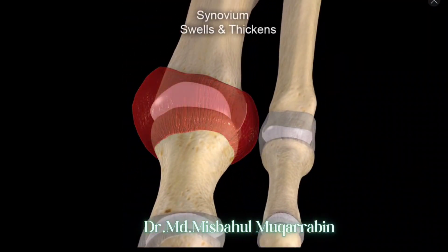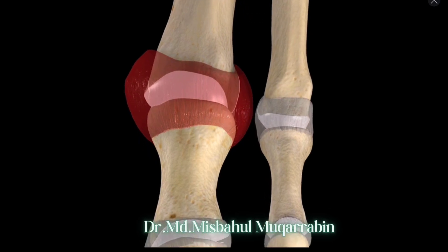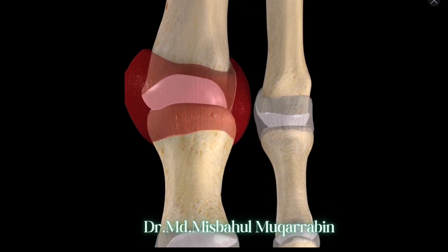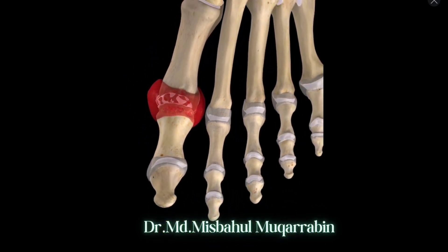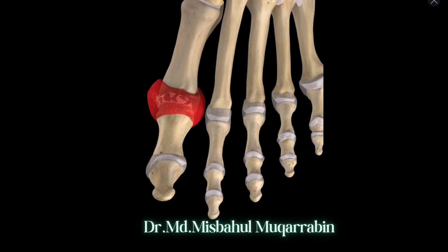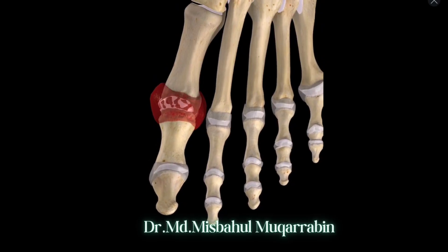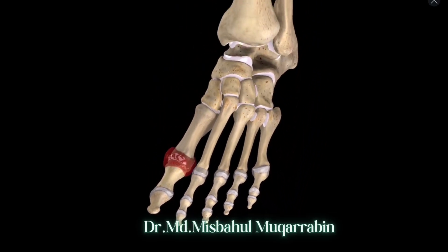Erosion of the cartilage covering articular surfaces of the joint causes chondral damage and arthritis may result. This may lead to destruction and deformity of the joint.